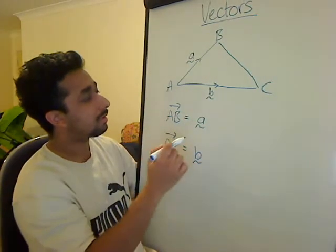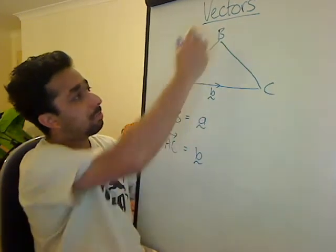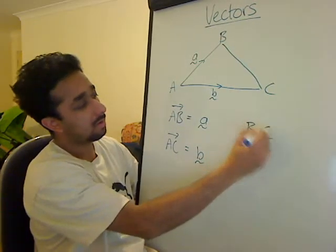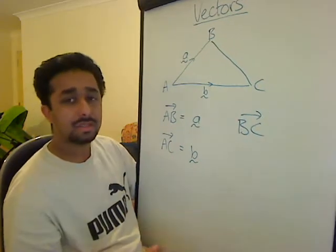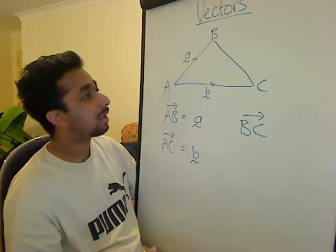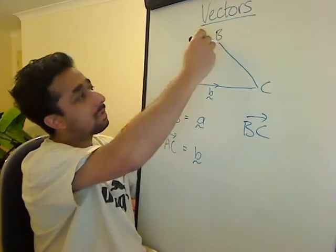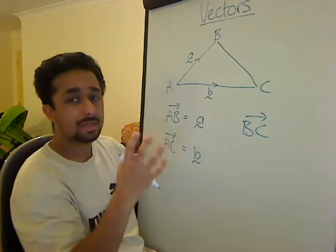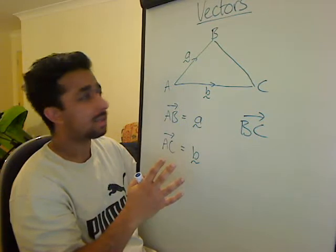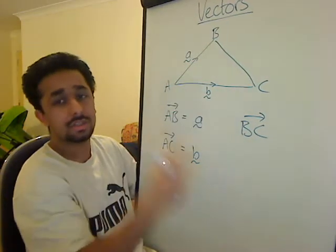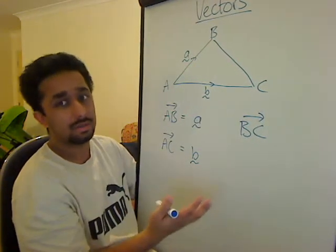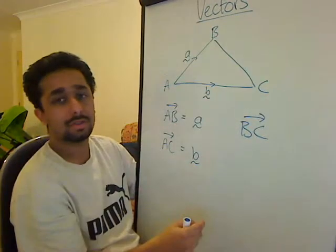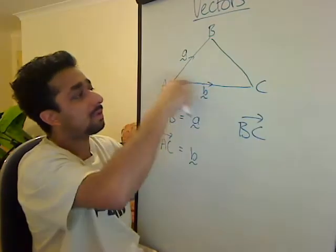But what happens if you want to know what B to C is? B to C, from there to there, you can take the long route and go this way. Remember, vectors are all like train tracks. You have to, if there's no train track, you can't go that way. You can't go there if there's no track, basically.